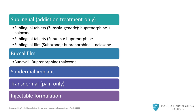There are other buprenorphine formulations available for chronic pain treatment. These include transdermal formulations, injectable formulations, as well as buccal formulations. In the United States, only the sublingual formulations or the implant are approved for the treatment of opioid addiction or opioid use disorders. The other formulations, such as the transdermal patch, are approved for chronic pain treatment.